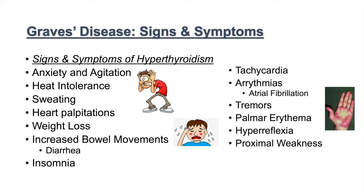T4 and T3 regulate a wide variety of things in our body, and you can remember it by the three M's: movement, mentation, and metabolism. Movement refers to increased agitation, tremors, and increased bowel movements — things are moving quickly. Mentation relates to the anxiety component. And increased metabolism accounts for weight loss, high energy levels, and insomnia.